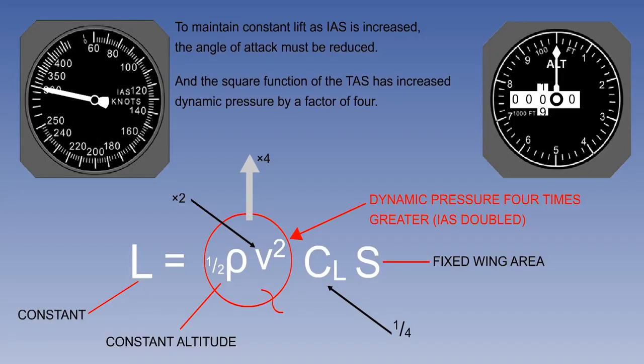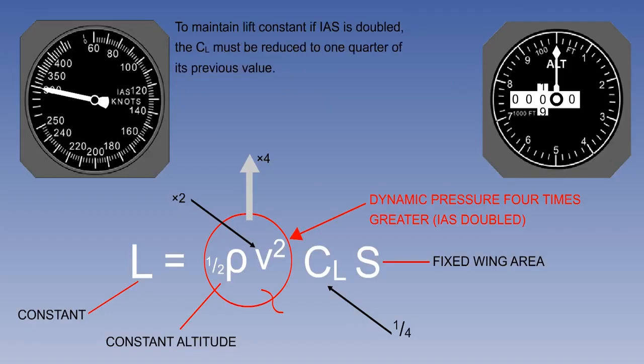If indicated airspeed is doubled, here from 150 knots to 300, the TAS also doubles, increasing dynamic pressure by 4.